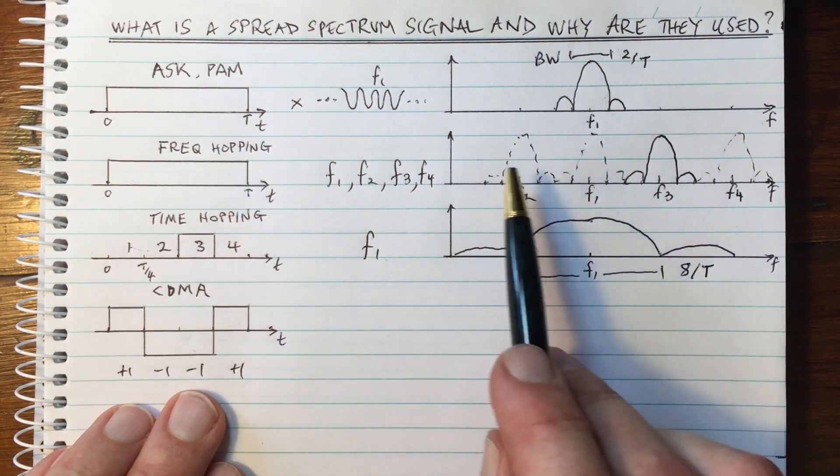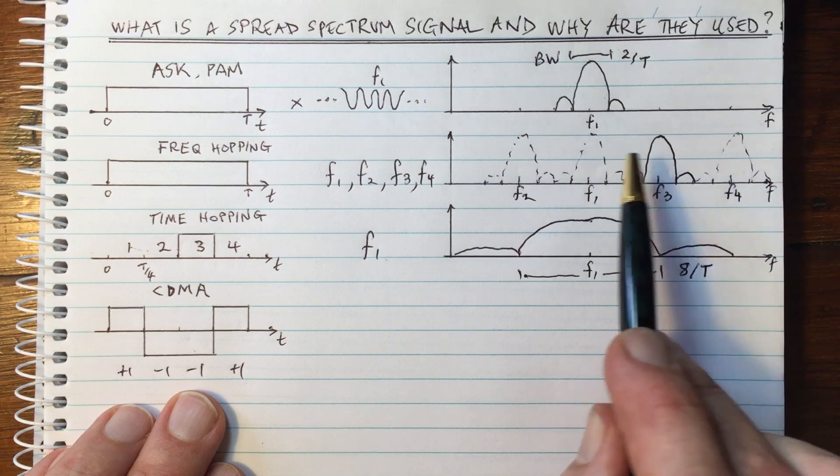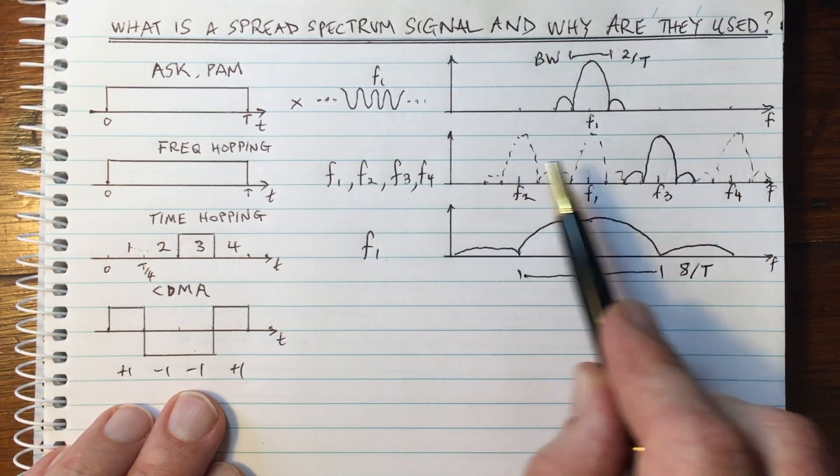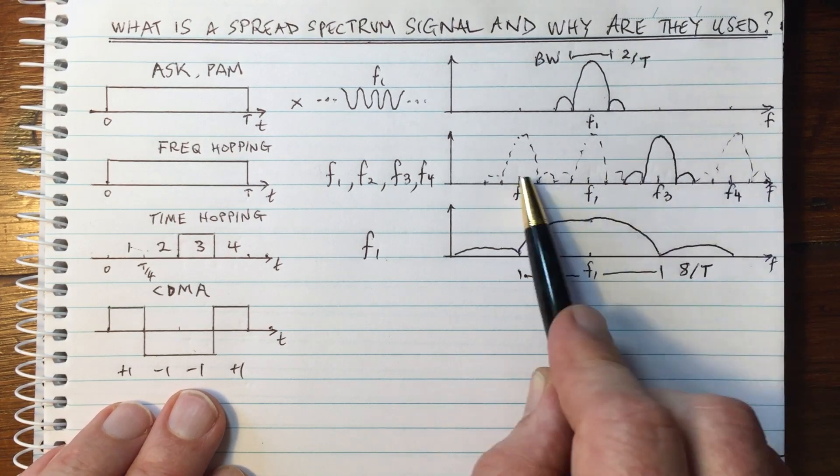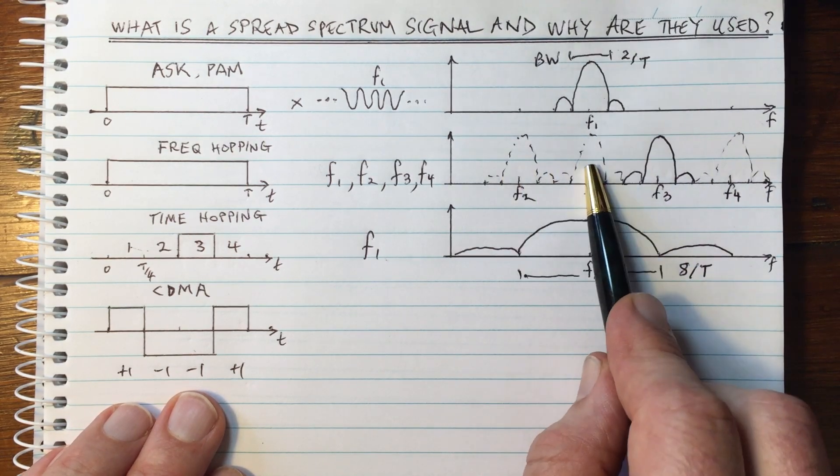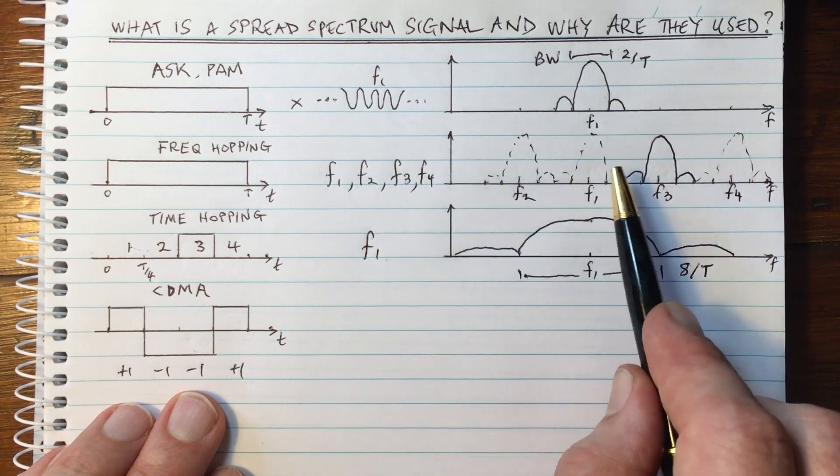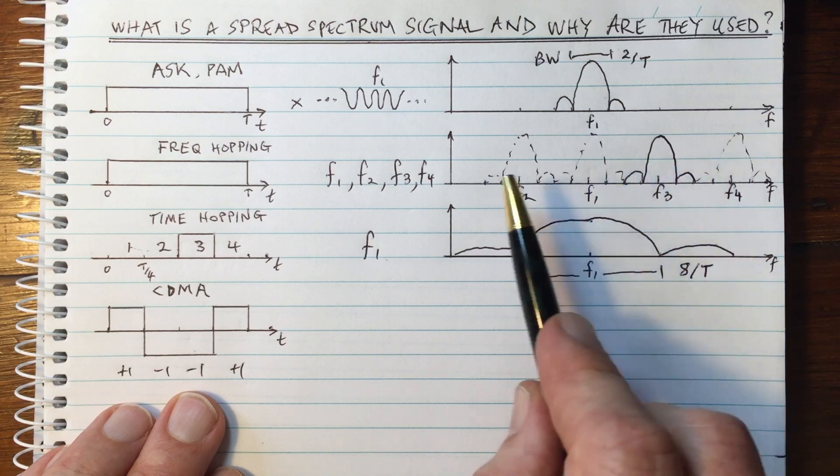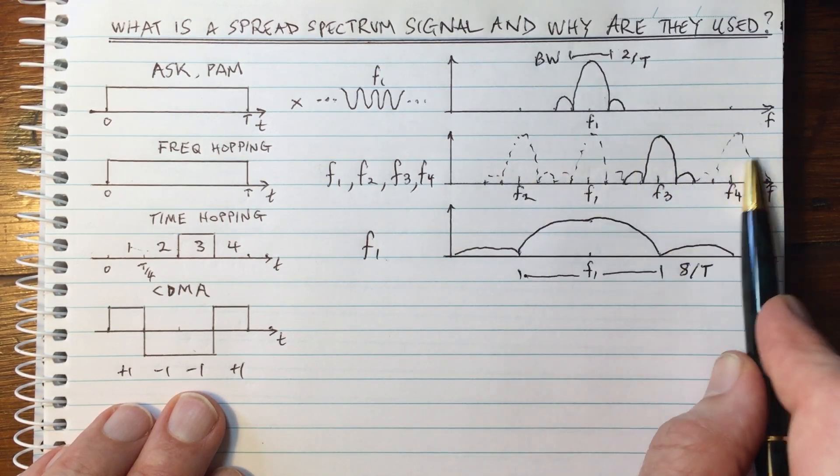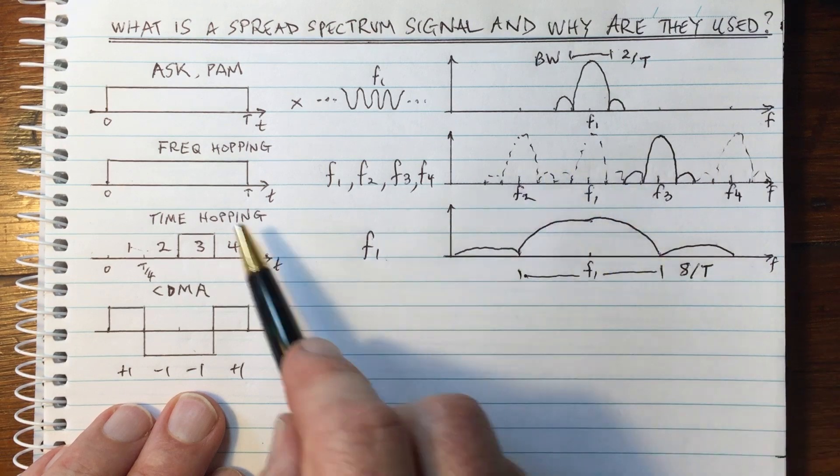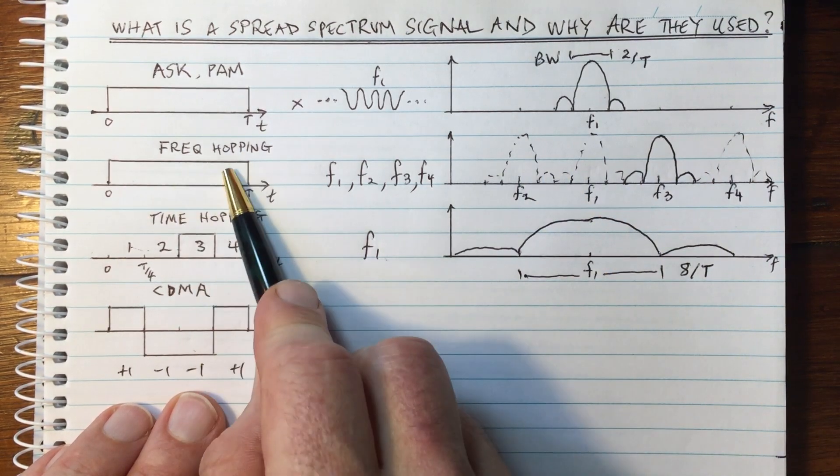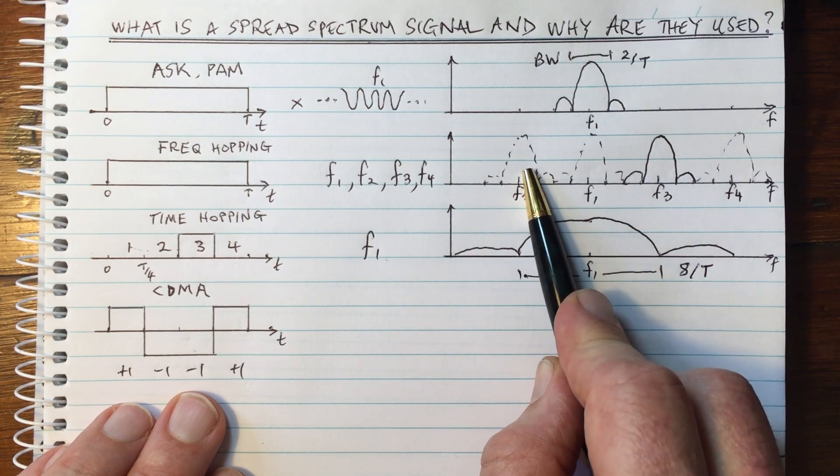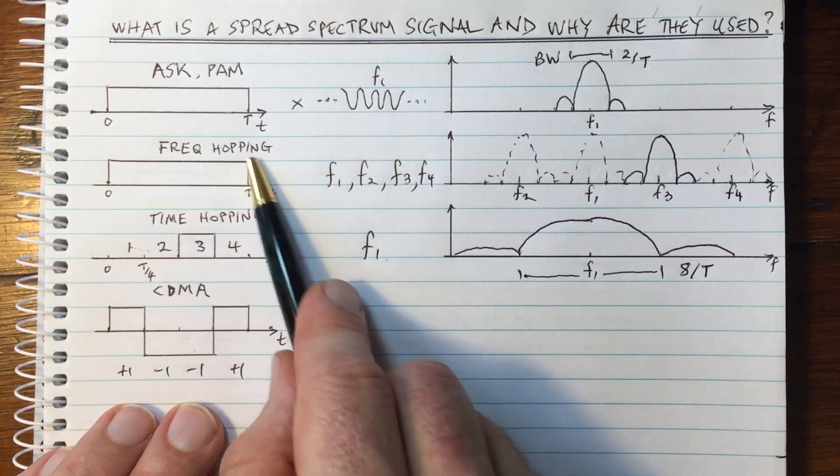And so, for example, in frequency hopping, if we hop around the frequencies like this, then another user can also be hopping around the frequencies. And if we have enough frequencies, I've only shown four here, but if we had more frequencies, then there's a small chance that both users are trying to use the same frequency band at the same time. And so you can have other users using the other parts of the spectrum that you're not using. And therefore, lots of people can use the spectrum at the same time without coordination. So that's a really good advantage of the randomization in frequency hopping.